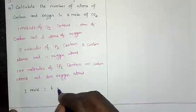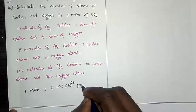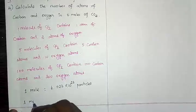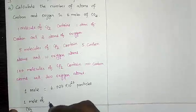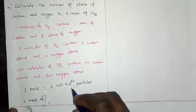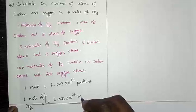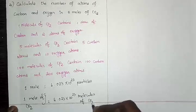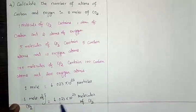We know the concept: one mole equals 6.023 × 10²³ particles — particles may be atoms, molecules, or ions. So one mole of carbon dioxide means 6.023 × 10²³ molecules of carbon dioxide.